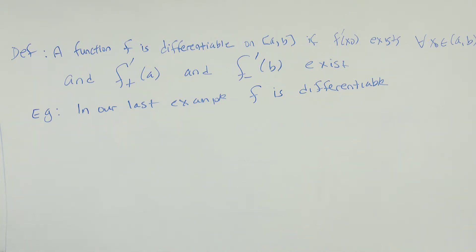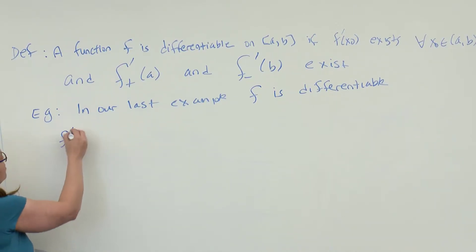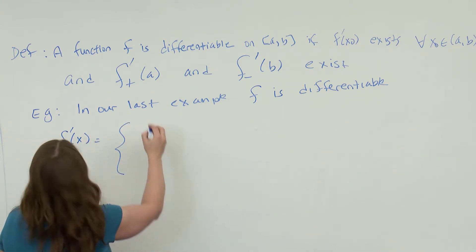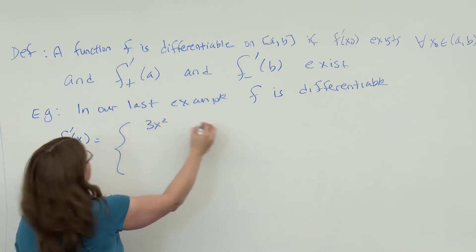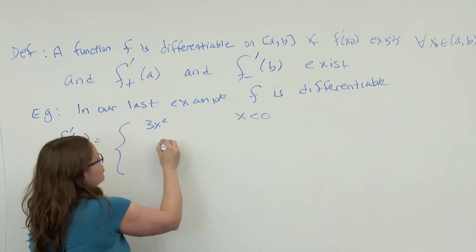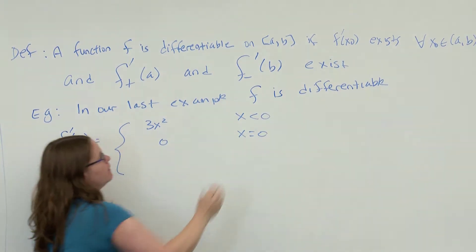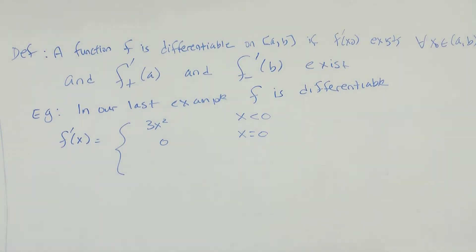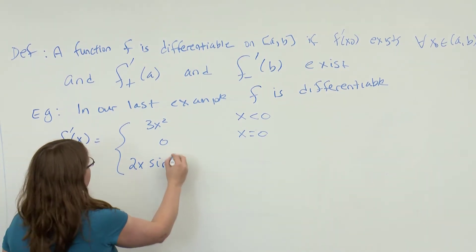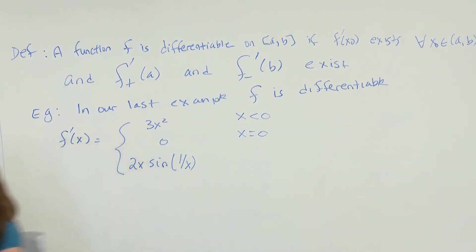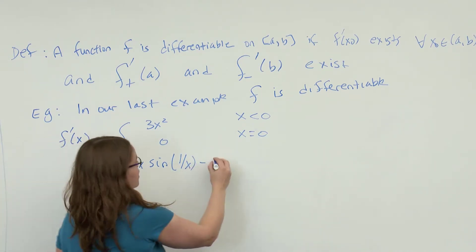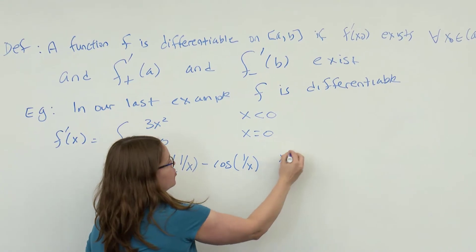We can write down f′(x) explicitly: it equals 3x² for x < 0, zero for x = 0, and 2x·sin(1/x) − cos(1/x) for x > 0. The derivative gives us a new function, and we can ask whether this new function is itself continuous.